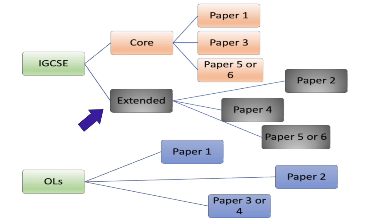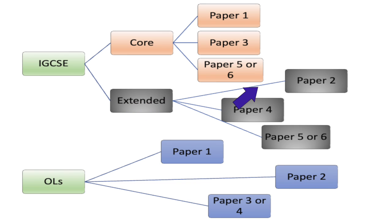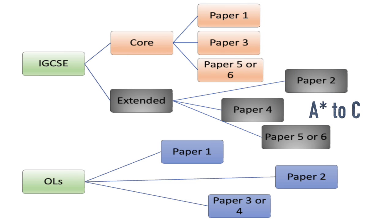When it comes to Extended, this is the majority of students. If you go through IGCSE Extended, you need to pass through three different papers: paper two, paper four, and paper five or paper six. Through this exam board you can get a grade from A* up to C.